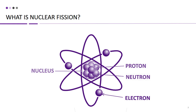For example, an atom with one proton is hydrogen, while an atom with six protons is carbon. Electrons are negatively charged particles that orbit around the nucleus in energy levels or electron shells. These electrons are responsible for the chemical behavior of atoms and their interactions with other atoms. Electrons are much smaller and lighter than protons and neutrons, and they are found in constant motion around the nucleus.